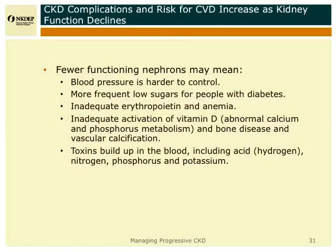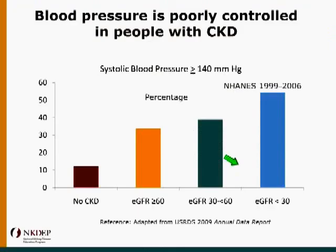There are fairly complex derangements of vitamin D and parathyroid hormone which will result in significant morbidity, and how we treat that is still up in the air since it's mostly based on observational data. And then there's uremia, where waste products build up in the blood, including acid-base disturbance where the kidney has trouble excreting acid, and phosphorus increases, as well as potassium.